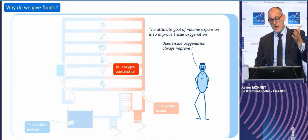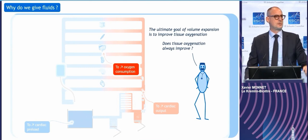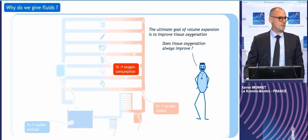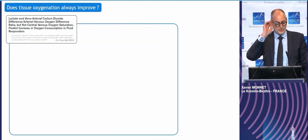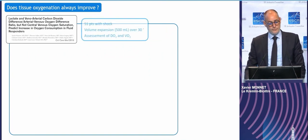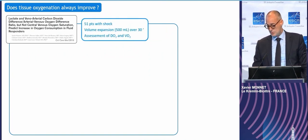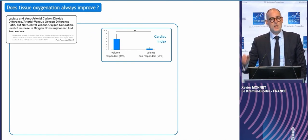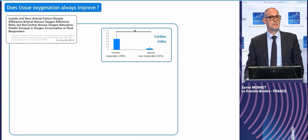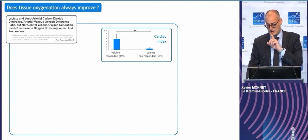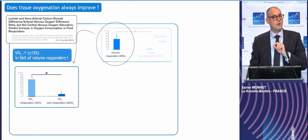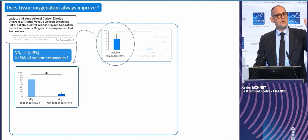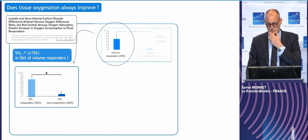Basically, fluids are aimed to improve tissue oxygenation. Did tissue oxygenation improve with my fluid bolus? In fact, it does not always happen. We showed that in a study years ago with Jean-Louis Treboul — we gave fluid to these patients, mainly septic patients. Not surprisingly, only half of the patients increased their cardiac output. But in fluid responders, where cardiac output and oxygen delivery increased, oxygen consumption improved in only 56% of patients. In the others, fluid had increased oxygen delivery without any improvement in tissue oxygenation.